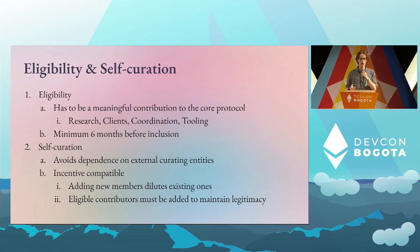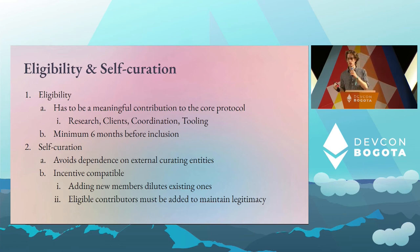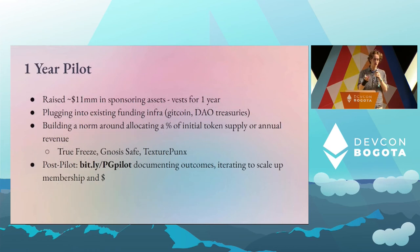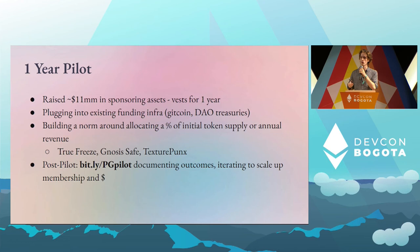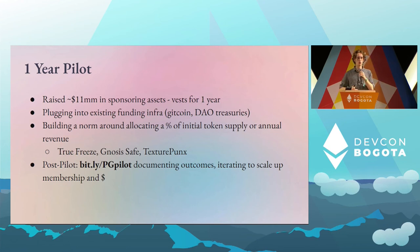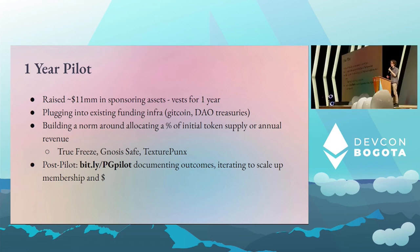If eligible contributors are not being added, it removes any legitimacy that's built up over time and external funders won't continue funding this mechanism — so we hope these are sufficiently balanced against each other. This next year is a learning period. We've launched a one-year pilot to test out the assumptions about the challenges we wanted to address, as well as the best ways to approach them — how long should vesting be, things like this. We launched the protocol in May of this year and it'll run until May of next year. So far we've raised 11 million in sponsoring assets, and these will vest over one year to incentivize long-term contributions and knowledge transfer between different cohorts of core contributors.